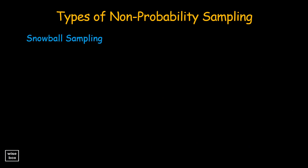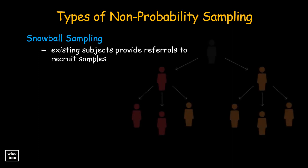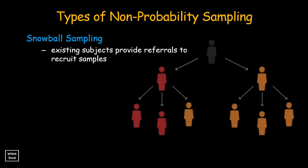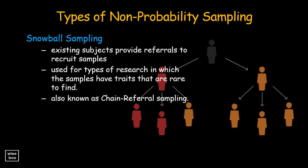Snowball sampling is a non-probability sampling technique in which existing subjects provide referrals to recruit samples required for a research study. This method is used for types of research in which the samples have traits that are rare to find. Snowball sampling is purely based on referrals, and that is how a researcher is able to generate a sample. Thus, this method is also called the chain referral sampling method.